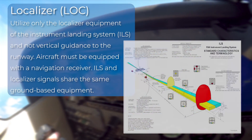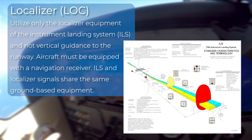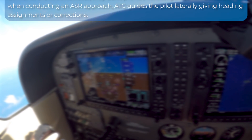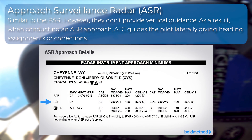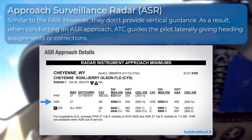Localizer approaches utilize only the localizer equipment of the instrument landing system, and not vertical guidance to the runway. Aircraft must be equipped with a navigation receiver. ILS and localizer signals share the same ground-based equipment. Approach surveillance radar approaches are similar to the PAR; however, they don't provide vertical guidance. When conducting an ASR approach, air traffic control guides the pilot laterally, giving heading assignments or corrections.